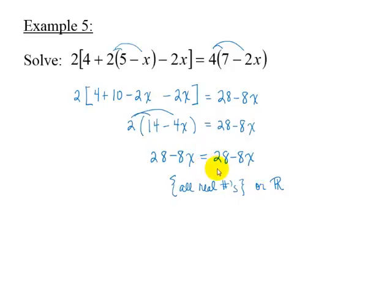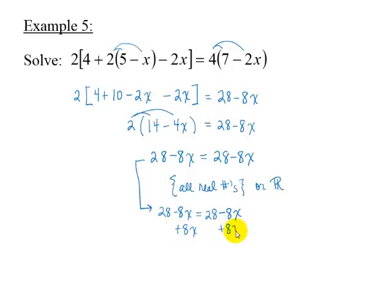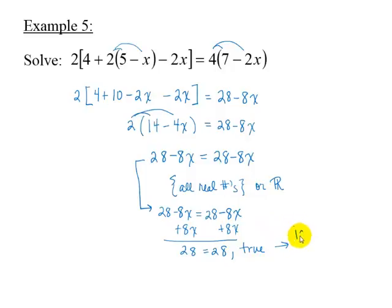Suppose you didn't notice the left side and right side were the same. We could add 8x to each side to get 28 equals 28. When the variable is eliminated from the equation and a true numerical statement results, the equation is an identity with all real numbers as solutions.